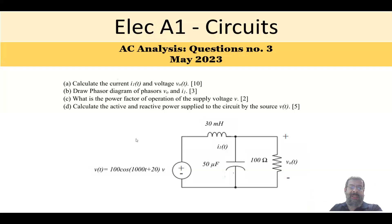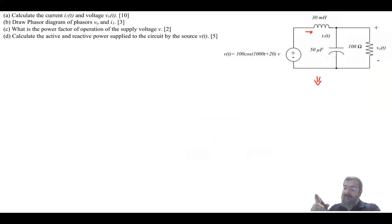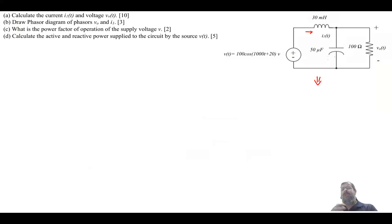In this question, you are given a voltage supply, an inductor, a capacitor, and a resistance — all in the time domain. You want to find the current and the output voltage across the resistance, also in the time domain. Solving directly in the time domain would require a second-order non-homogeneous differential equation, which is very difficult. AC analysis makes it much easier and gives the same result.